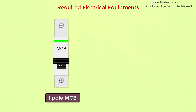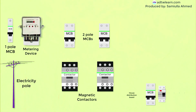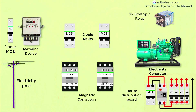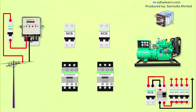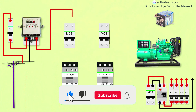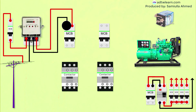Apart from these, we need a single pole and two pole MCBs. Now let's do the wiring. Here we take supply from the electricity supply grid and connect it to the metering device through a single pole MCB. Then the supply is connected to the magnetic contactor through the two pole MCB. From this contactor, the supply is connected to the house distribution board.